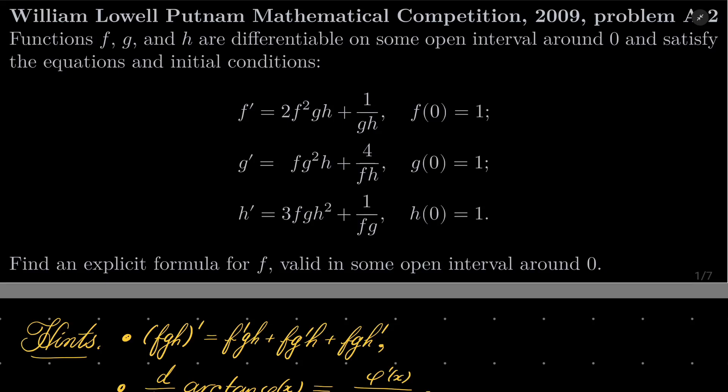Hello friends. In this video I'd like to solve the following problem from the William Lowell Putnam Mathematical Competition 2009, problem A2. Functions f, g, and h are differentiable on some open interval around 0 and they satisfy the following equations with initial conditions. We wish to find an explicit formula for f valid in some open interval around 0.